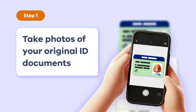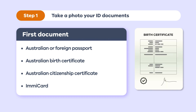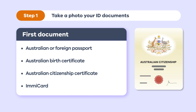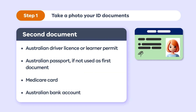To complete the first step, you'll need two identity documents. Your first document must be either an Australian or foreign passport, Australian birth certificate, Australian citizenship certificate, or an ImmiCard.